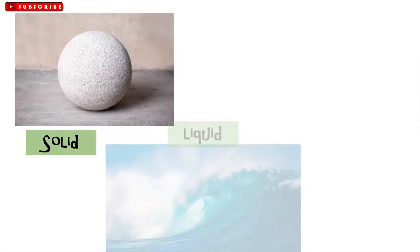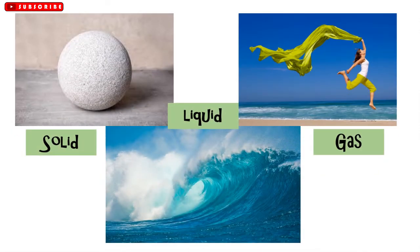Solids, liquids, and gases have different characteristics. The characteristics of matter are described based on how the matter looks like, how it feels to touch, and how it acts.